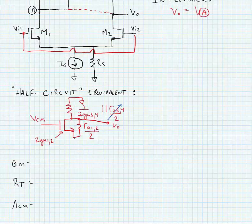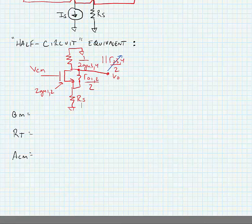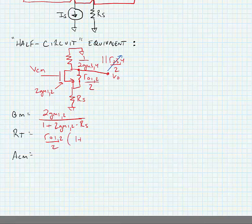This transistor effectively has twice the GM because it's two transistors in parallel. And finally we have our resistance from the current source, which is RS. We can now do analysis to find VO over VCM. Big GM in this case is simply equal to 2GM12 over 1 plus 2GM12 times RS, which is coming from the current source. Our R total is equal to RO12 over 2 times 1 plus 2GM12 times RS, in parallel with 1 over 2GM34.